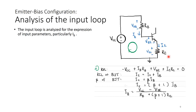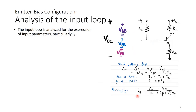From KCL at the BJT node, IE = IC + IB. We also know that IC = β·IB from the BJT transistor characteristics. Substituting IE = (β + 1)·IB into the KVL equation and rearranging gives: IB = (VCC − VBE) / (RB + (β + 1)·RE). This has the form of Ohm's law: I = V/R.